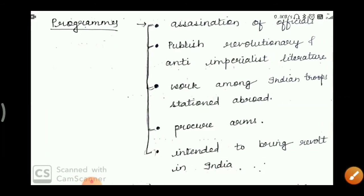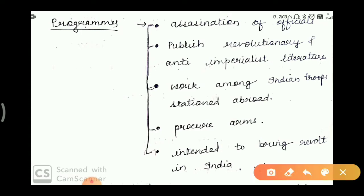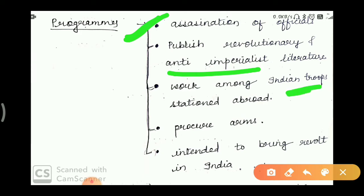The party's programs were: first, the assassination of officials — because they were revolutionary, they wanted to assassinate officials. After that, they published revolutionary ideologies, which were anti-imperialist in nature. They also worked among Indian troops stationed abroad — like in North America, Canada, France, and Germany — to carry out revolutionary activities.